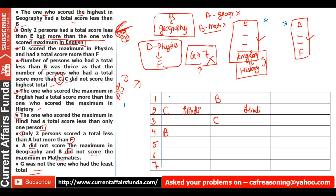For the A-to-F clue: if A is at rank 1, the gap of two puts F at rank 3 — but rank 4 is already fixed as B, so A cannot be rank 1. If A is at rank 3, gap of two puts F at rank 5 — this works. If A is at rank 5, gap of two would put F at rank 7 — but rank 7 availability must be checked. For the second diagram: if A is at rank 2, F goes to rank 5; if A is at rank 4, F goes to rank 7. So two main conditions are forming.